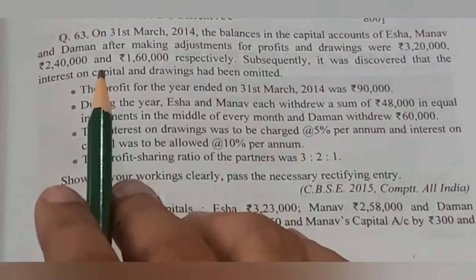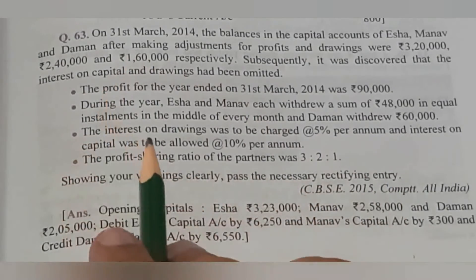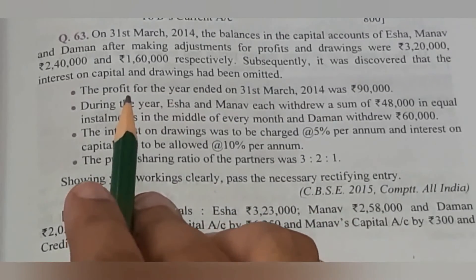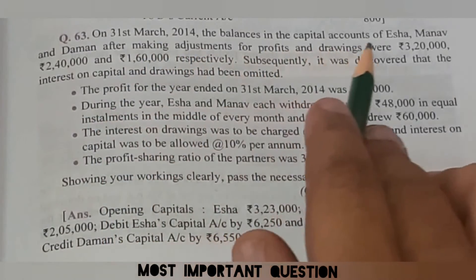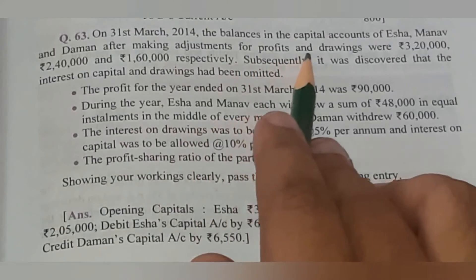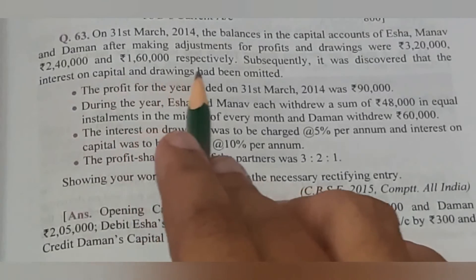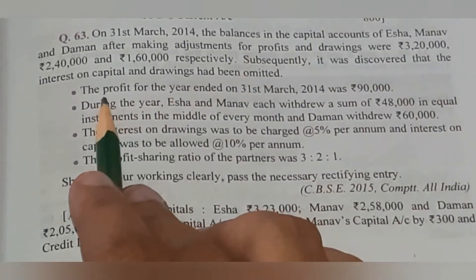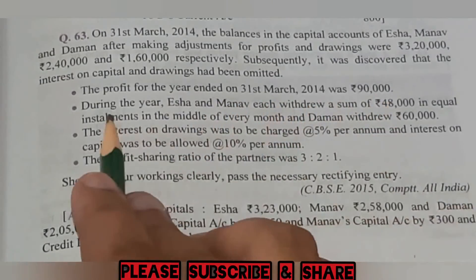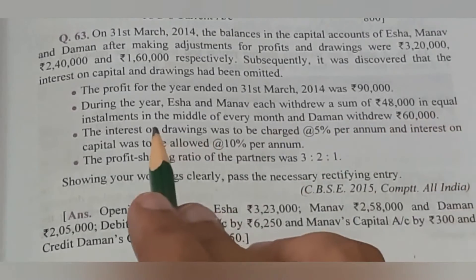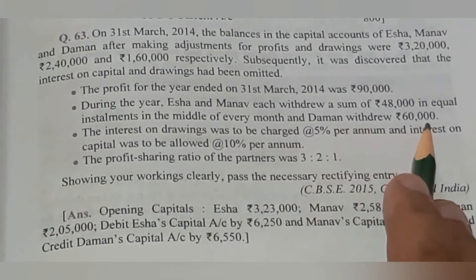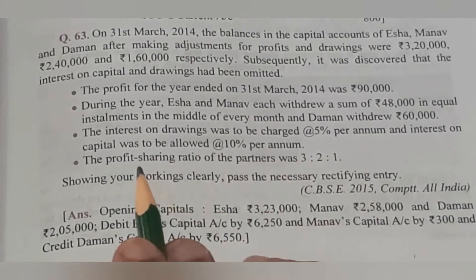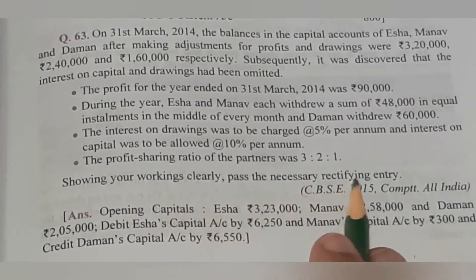Question number 63 — important question, CBSE में आया हुआ है और 2020 board exam में भी इसी तरह का question था। On 31st March 2014, the balance in the capital accounts of Isha, Manav, and Daman after making adjustment for profit and drawings were 3,20,000, 2,40,000 and 1,60,000. It was discovered that interest on capital and drawings had been omitted. The profit for the year ended 31st March was 90,000. Isha and Manav each withdrew 48,000 in equal installments in the middle of every month, and Daman withdrew 60,000. Interest on drawings 5% per annum, interest on capital 10% per annum. Profit sharing ratio 3:2:1. Pass the necessary rectifying entry.